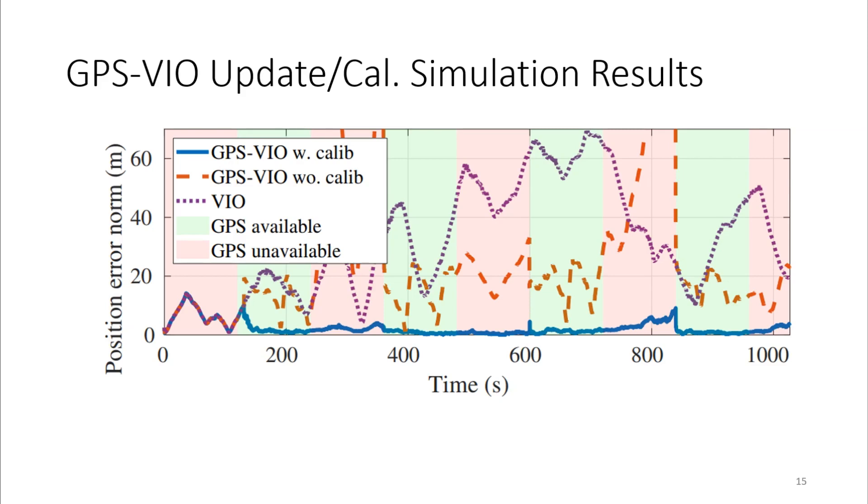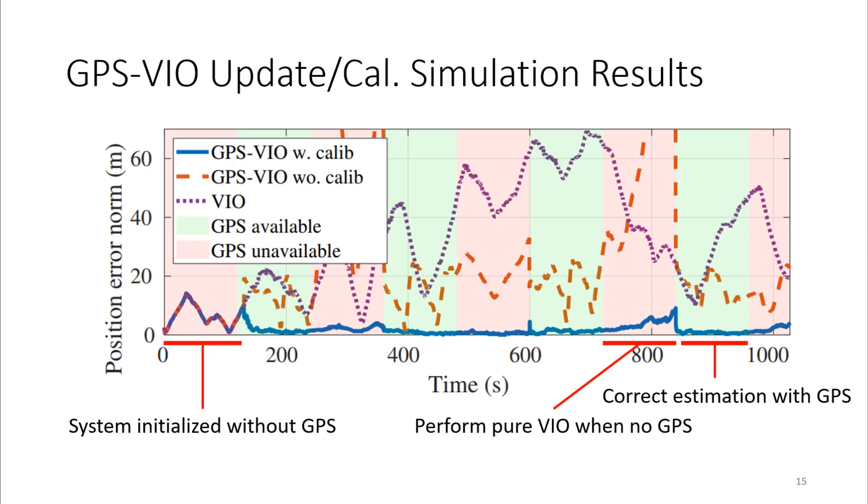At the beginning, all systems run as pure VIO because they are not initialized. Even after initialization, GPS-VIO with calibration performs as pure VIO and shows increase of errors as shown around 800 seconds. However, soon the system gets GPS measurements, the errors shrink down near zero and remain small.